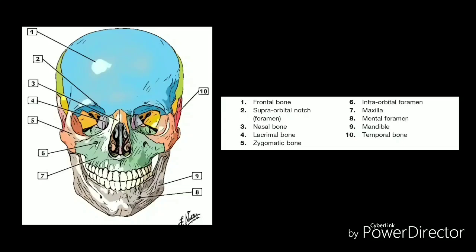The two slender nasal bones located in the midline of the face fuse to form the bridge of the nose and also articulate with the frontal, ethmoid, and maxilla bones. The inferior nasal conchae are located within the nasal cavity. They are spongy and curled in shape. Their primary function is to increase the surface area of the nasal cavity, increasing the amount of air that contacts the mucous membranes and cilia of the nose, thus filtering, warming, and humidifying the air before it enters the lungs. At the base of the nasal cavity is the small vomer bone, which forms the nasal septum.